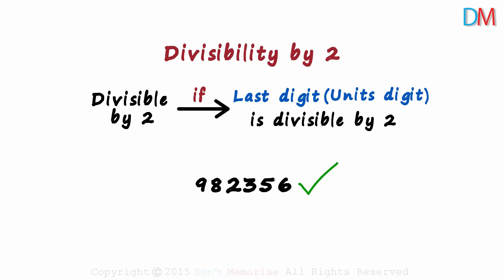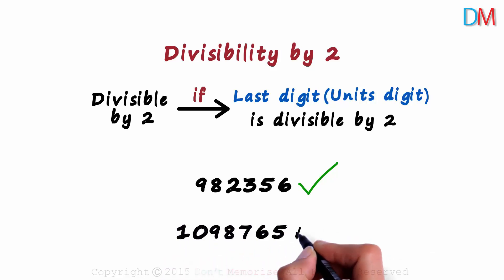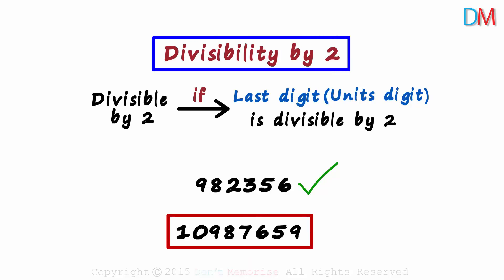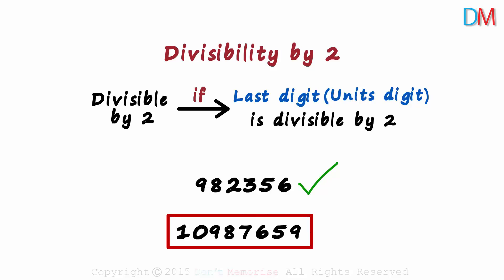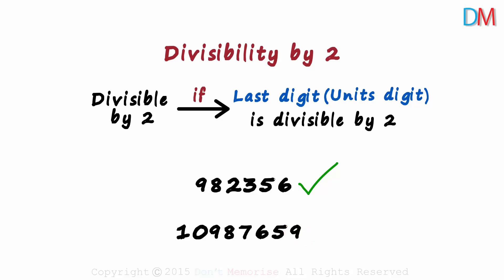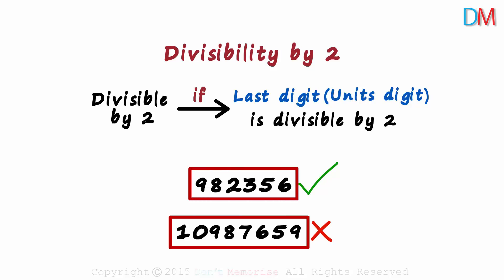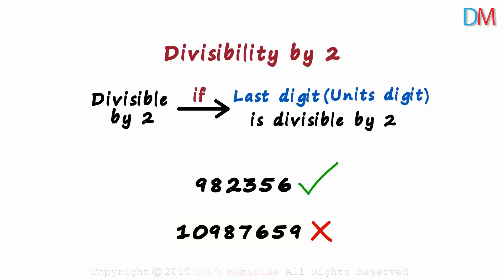Here's the second number: 10,987,659. Is this number divisible by two? The units digit of this number is nine. Is nine divisible by two? No, and that is why this number is also not divisible by two. That's how simple it gets with divisibility rules. Imagine how much time it would have taken you to manually divide these two numbers by two and check if the remainders are zero or not.